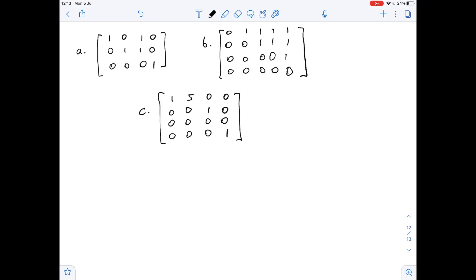So we need to determine which matrices are in reduced echelon form and which are in echelon form. Let's start with matrix A. Here we can see that the leading entry in each non-zero row is one. As you can see here, the leading entry is one, the leading entry is one, the leading entry is one.